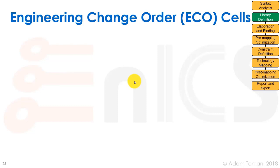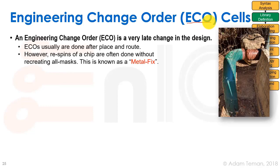The next category is engineering change order (ECO) cells. ECO is a very late design change, usually done after place and route, and sometimes even after fabrication — in what's called a metal fix for a chip respin. As an analogy: a strange pipe fix seen at a national park illustrates what an ECO looks like — a real poor ECO, but obviously a late fix applied to an existing design.